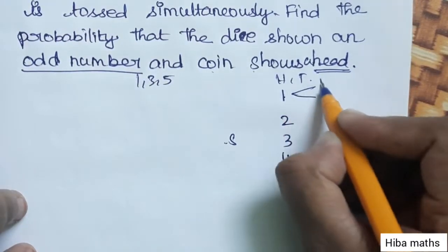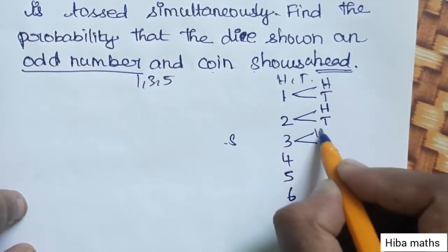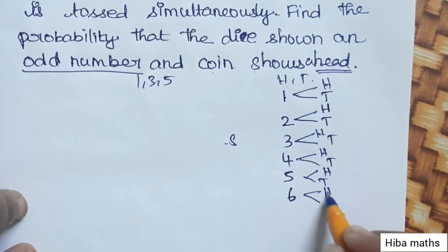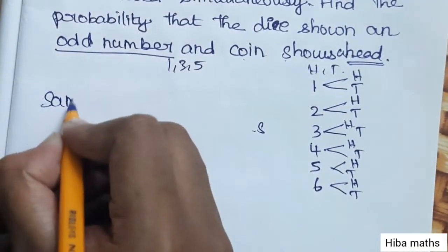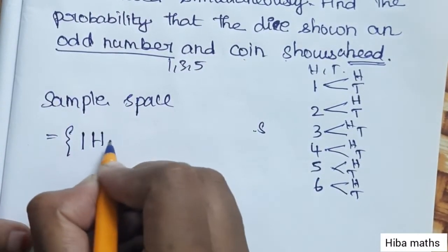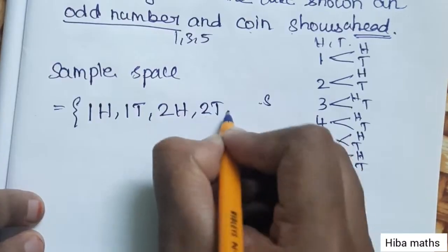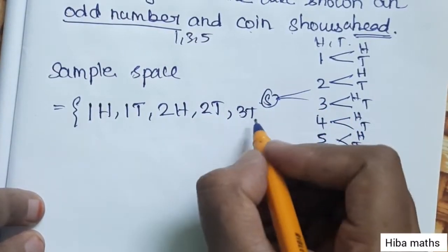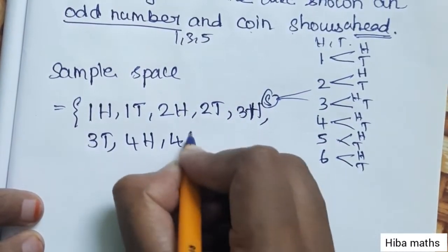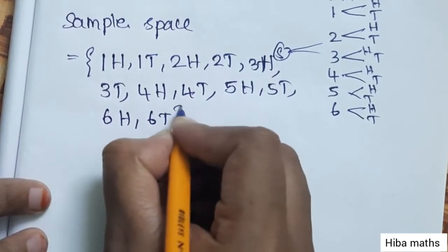For each die outcome, the coin gives a head and a tail. So: 1 head, 1 tail; 2 head, 2 tail; 3 head, 3 tail; 4 head, 4 tail; 5 head, 5 tail; 6 head, 6 tail.